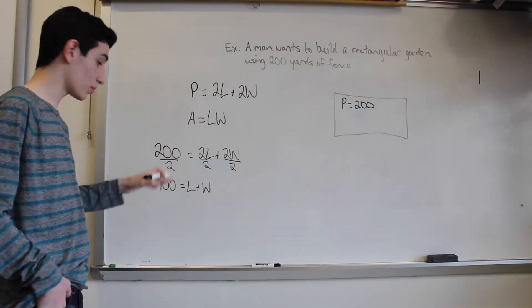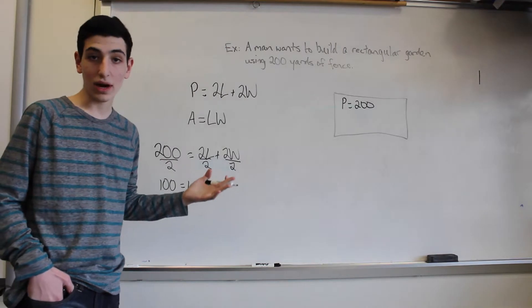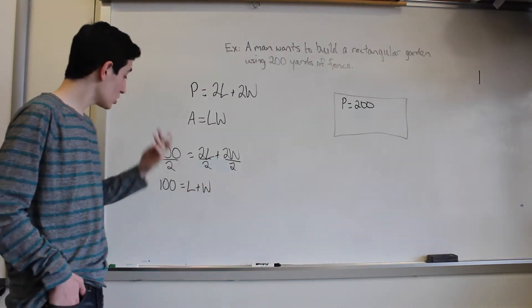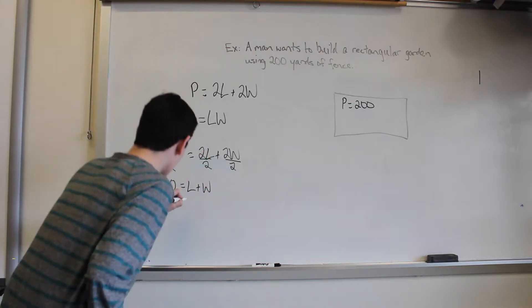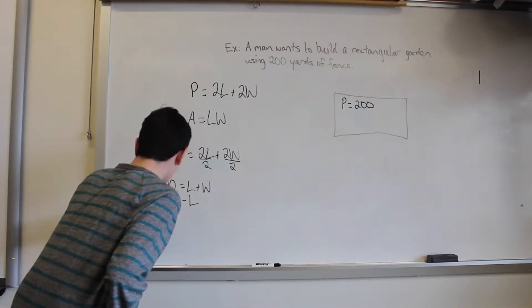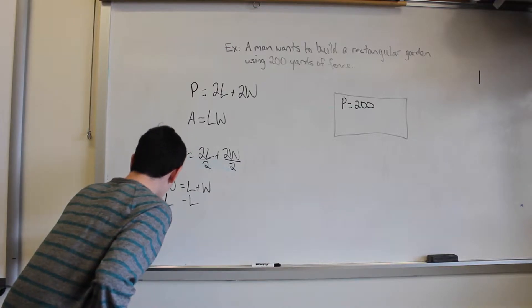Right now we're not going to be able to solve for the exact number of the length or width, but we can pick one and later use it as quadratic. So let's go ahead and solve for width. In order to do that we need to subtract L from both sides.